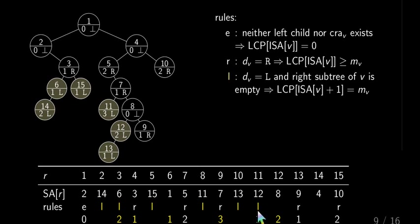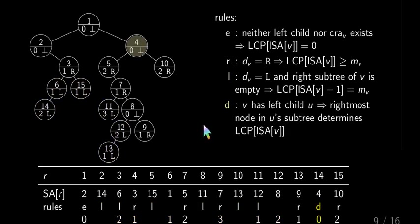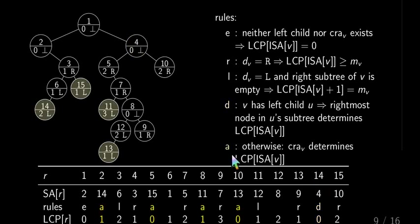There are some values left, and for instance, we have another rule, D for descendant. So whenever you have a left child, then you have to take the rightmost node in this left subtree, and this determines your LCP value. In this case, for 4, we have to go down to 9 and find the relationship between the 9 and the 4. In this case, the LCP is 0.